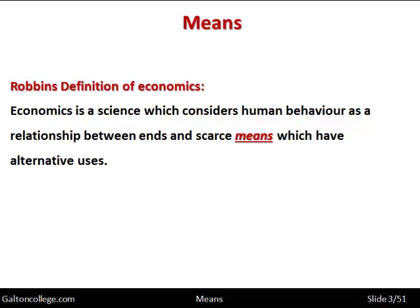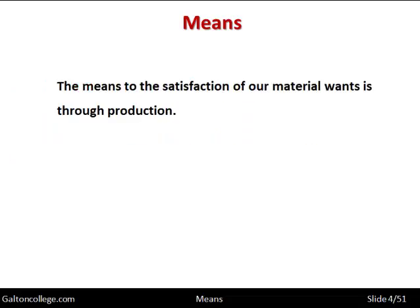We've got scarce means, and this is the subject matter of the video — we're going to talk about the means of production. The means to the satisfaction of our material wants is through production. That's how we satisfy our material wants: clothing, food, shelter, and then the higher order ones — the luxury items, the cars, the household goods and so on.